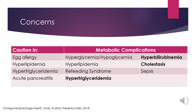There are some concerns when using IV lipid emulsions, and Omegaven is no exception. Use caution in those with egg allergies, hyperlipidemia, hypertriglyceridemia, and acute pancreatitis. Some secondary metabolic complications that may arise with the use of IV lipid emulsions like Omegaven are hyperglycemia, hypoglycemia, hyperbilirubinemia, hyperlipidemia, cholestasis, refeeding syndrome, sepsis, and hypertriglyceridemia.